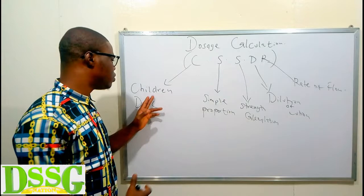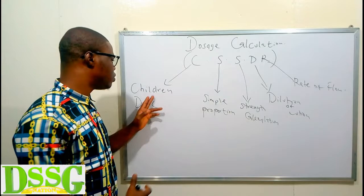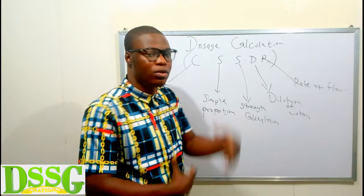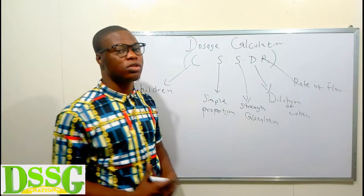You can either calculate the dosage for a child, calculate using simple proportion, calculate the strength of a particular solution, calculate dilution — how to dilute — and the last one is the rate of flow, which is used for intravenous infusions. Let's get started by picking the children's dosage calculation. In other videos we will talk about simple proportion and strength calculation together, and the last two together.